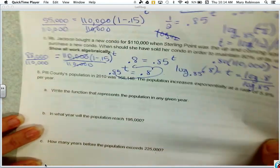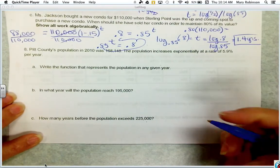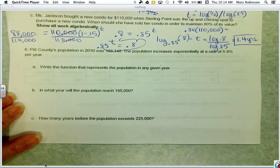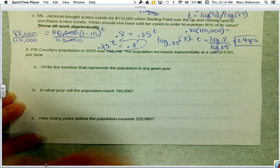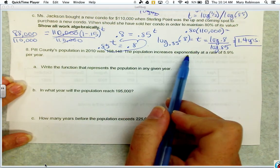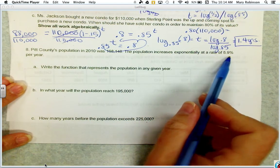Let's go ahead and move on to number eight. It says Pitt County's population in 2010 was 168,148. The population increases exponentially at a rate of 5.9% per year.